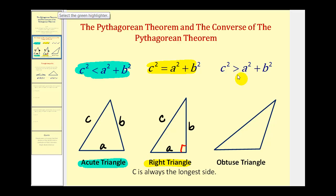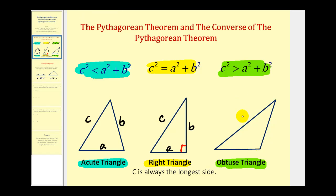The last case is if c squared is greater than a squared plus b squared. If this is the case, then we have an obtuse triangle, meaning that one of the angles would be between 90 and 180 degrees. Again, this would be side c, and these would be a and b.